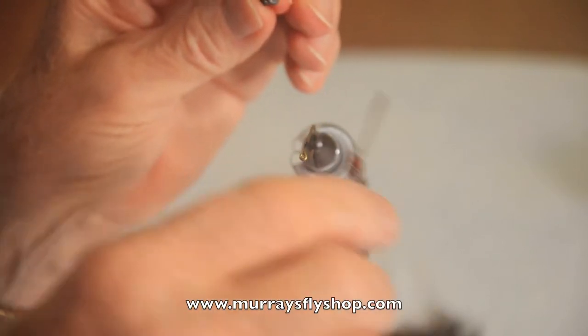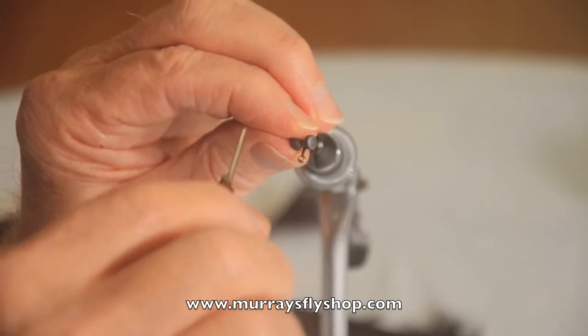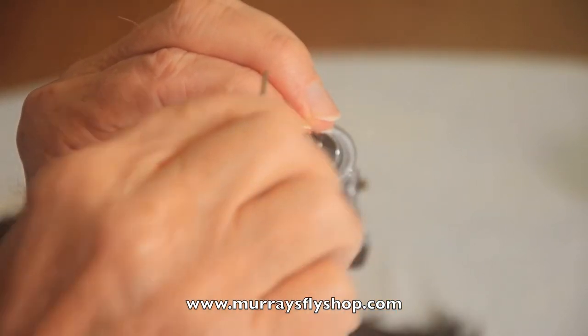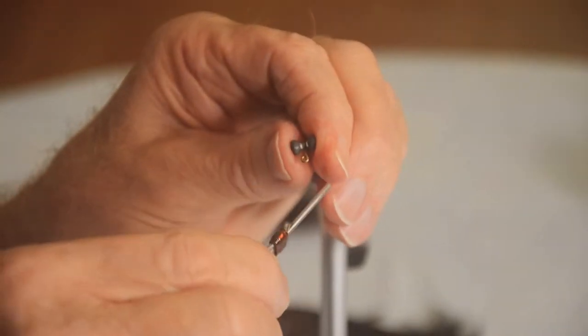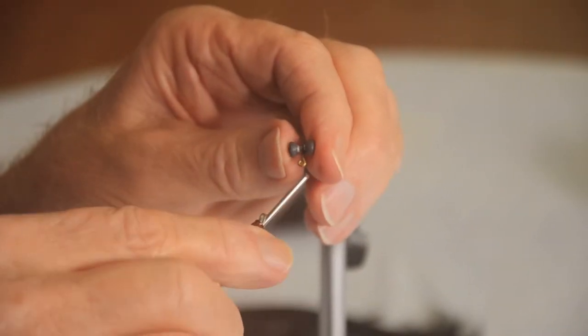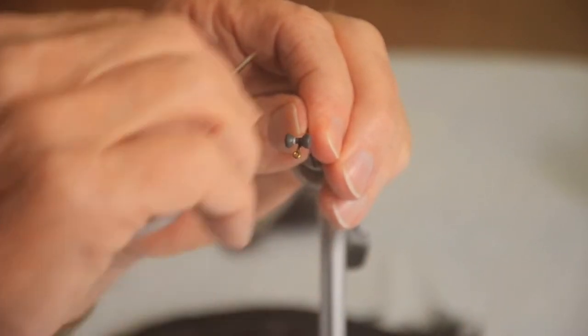What I do is get some thread on the hook shank. I lay my barbell eye across that thread and make about two wraps across it through the groove, two wraps back through it in the opposite direction, and then just make a couple more firming up wraps.